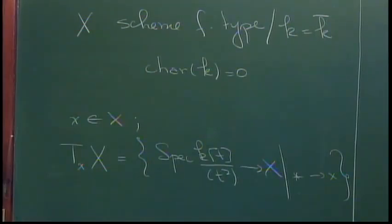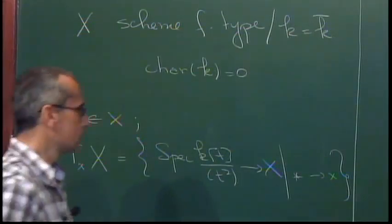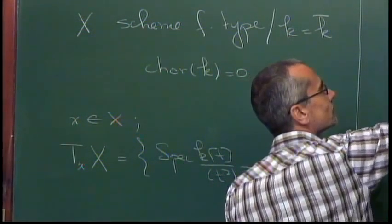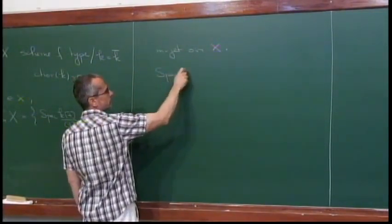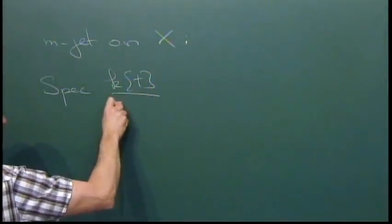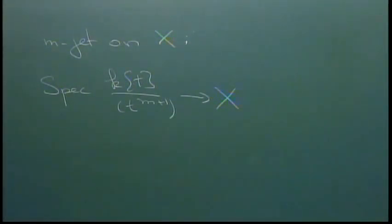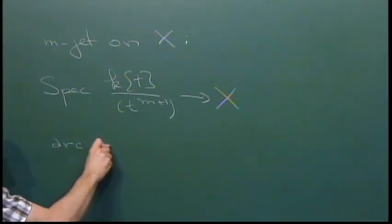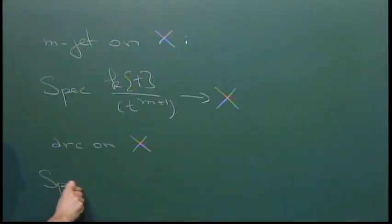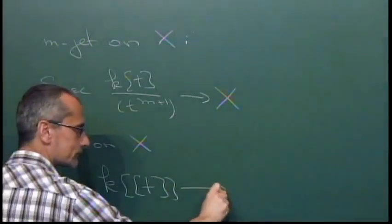Arc spaces and jet spaces are some sort of higher-order versions of this notion of tangent space. An M-jet on X is a scheme map from Spec K[T]/(T^{M+1}) to X. In particular, when M equals 0, this is just a point in X; when M equals 1, it's a tangent vector, and so on. An arc on X is a limit of such gadgets — it's a map from Spec of the formal power series in one variable to X.